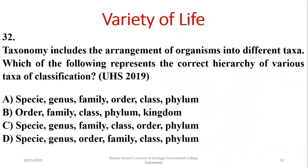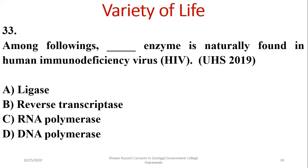Question 33: Taxonomy includes the arrangement of organisms into different taxa. The correct hierarchy uses the mnemonic 'PCO for Gupshap': Phylum, Class, Order, Family, Genus, Species. The reverse order gives the correct answer, which is alpha.